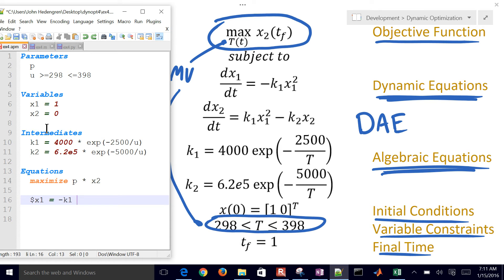And then I want to add my dynamic equations, dollar sign equals derivative, and then I have negative K1 times X1 squared, and then I have my expression, my second differential equation here. So that completes my model file here.